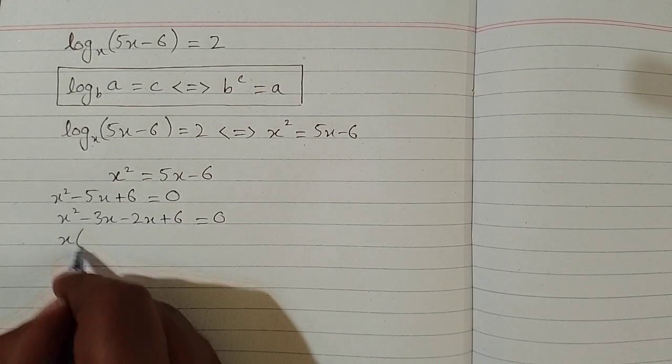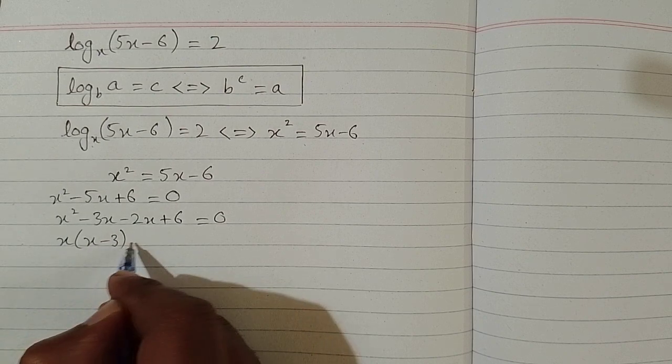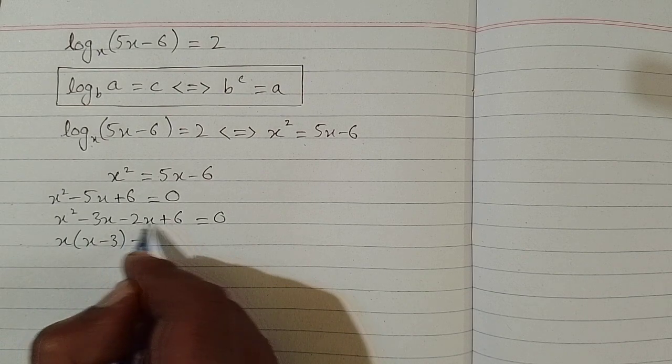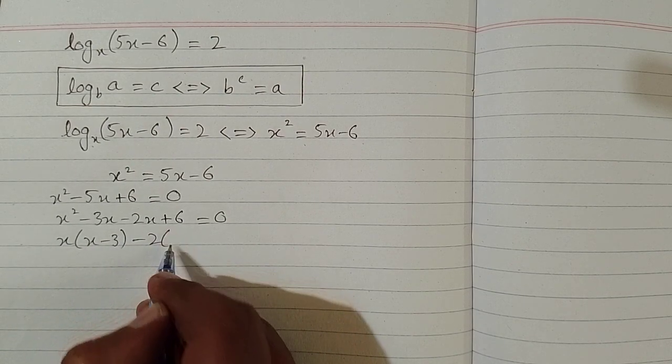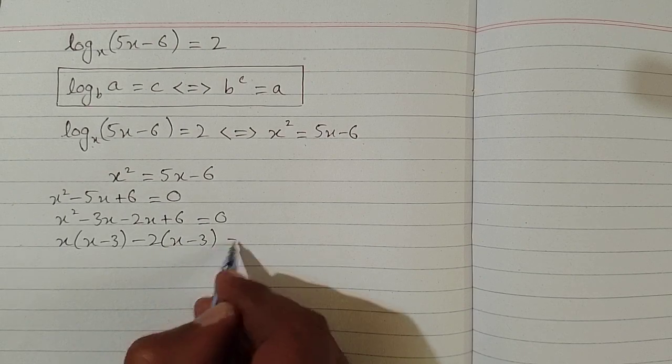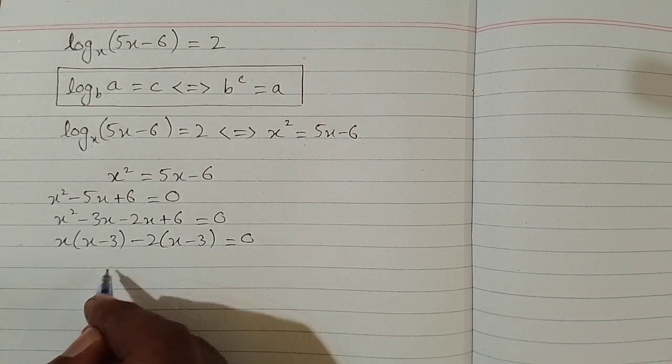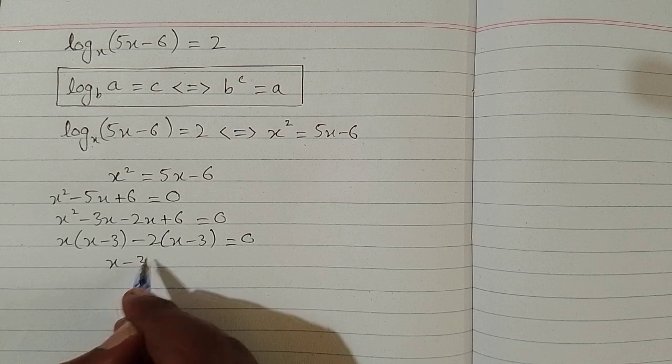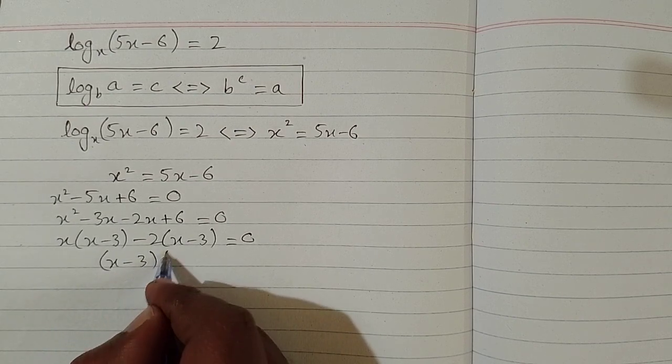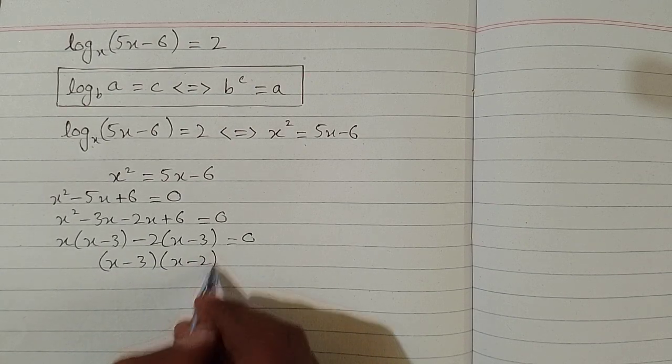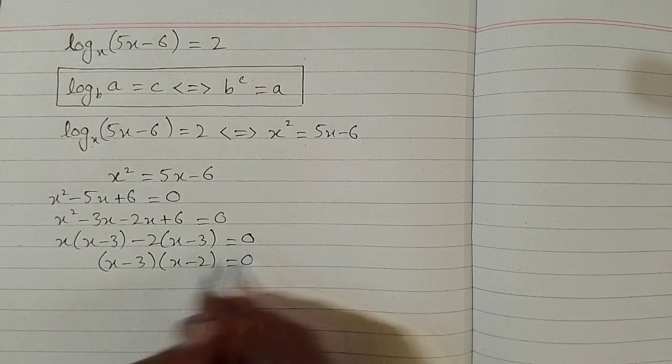And then we can take x common from the first two terms. And from the last two terms we can take minus 2 common. So we have x minus 3 as a common factor. Then again we can take x minus 3 common, so we have x minus 2 in the other bracket.